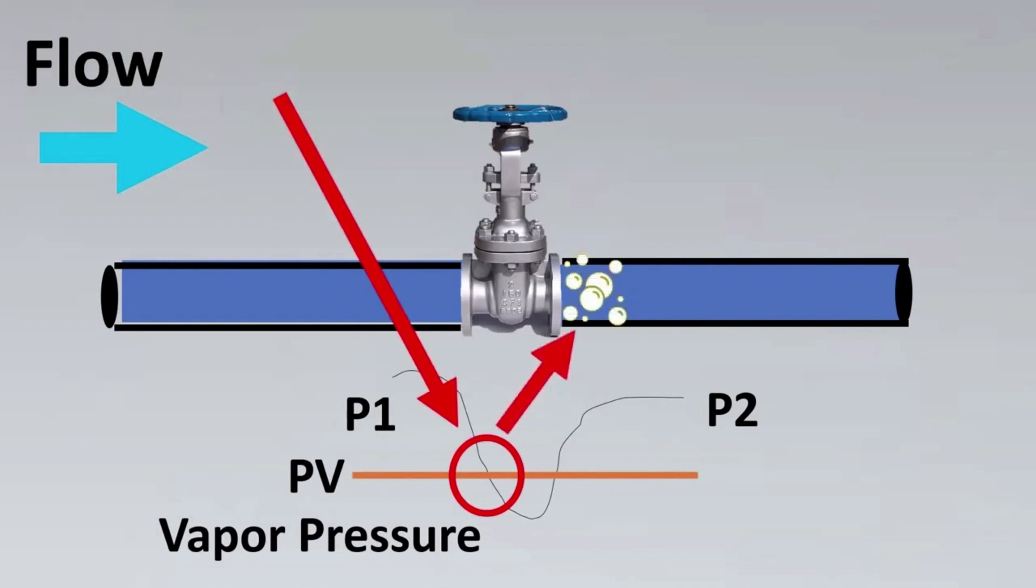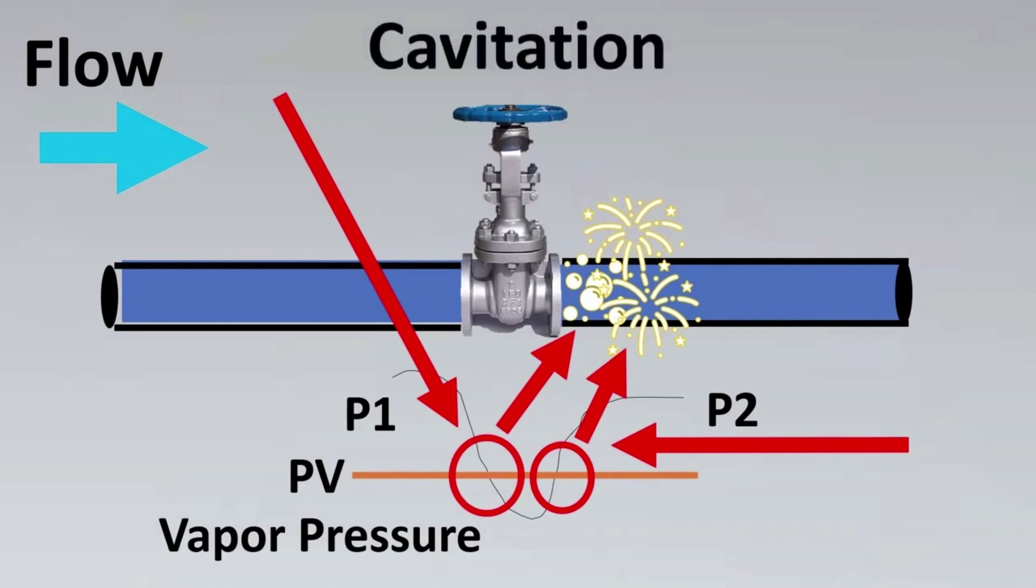At the exact opposite side, the vapor is going to turn back into liquid state. What happens here is the bubbles are going to burst to come back to liquid state, which is called popping. This has very high velocities that can damage the valve and the piping downstream. This entire phenomenon is called cavitation.